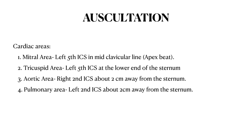In the last step, auscultation, we auscultate various areas: the mitral area is at the left 5th intercostal space in the midclavicular line or at the level of the apex beat. The tricuspid area is at the left 5th intercostal space at the lower end of the sternum. The aortic area is at the right 2nd intercostal space about 2 cm away from the sternum. The pulmonary area is at the left 2nd intercostal space about 2 cm away from the sternum. Over the mitral and tricuspid areas, you will hear the first heart sound due to closure of the bicuspid and tricuspid valves respectively. Over the aortic and pulmonary areas, you will hear the second heart sound due to closure of the aortic and pulmonary valves respectively.